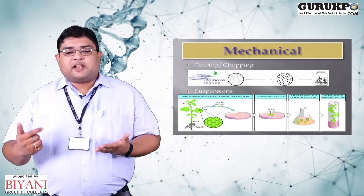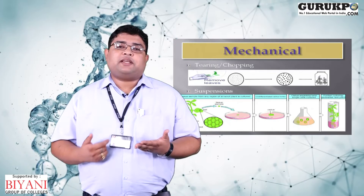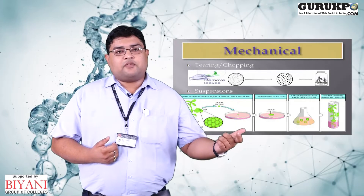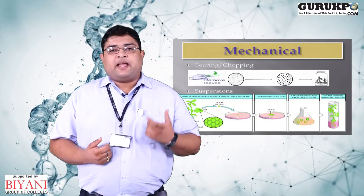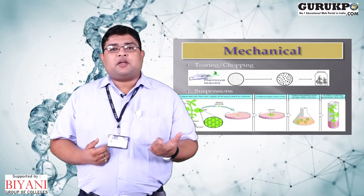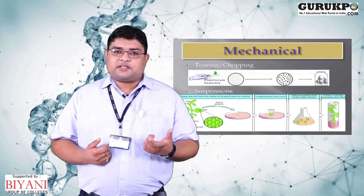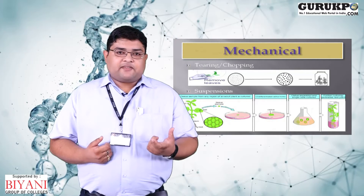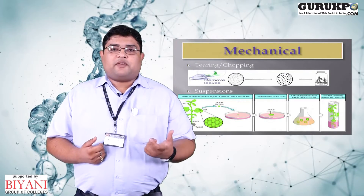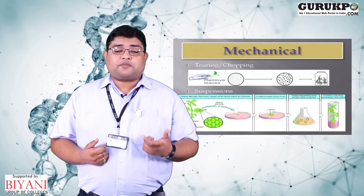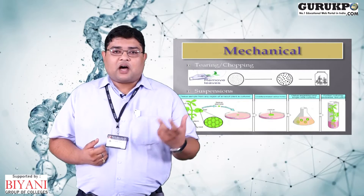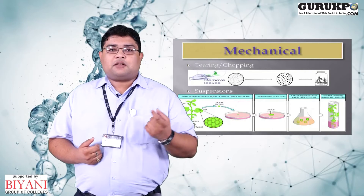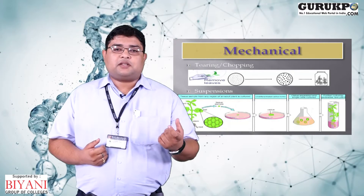In the suspension method, we first initiate callus culture using in vitro or in vivo grown leaf explants. These grown callus pieces are first converted into friable callus. The friable callus is then transferred into liquid media, which is placed on a rotatory shaker at 200 rpm so that harsh agitation is provided to the friable callus, causing single small cells to be isolated from the callus.